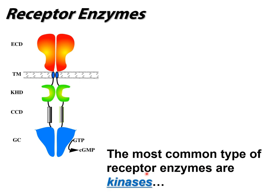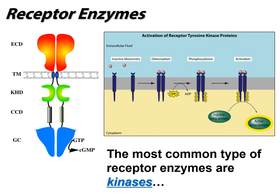The most common type of receptor enzymes are RTKs - receptor tyrosine kinases. If you know what a kinase is, the receptor gets activated by the message and then starts phosphorylating tyrosine residues on protein targets. The most common type of receptor enzymes catalyze the transfer of phosphate from ATP to a target to make a phosphorylated target. Here's our receptor tyrosine kinase.